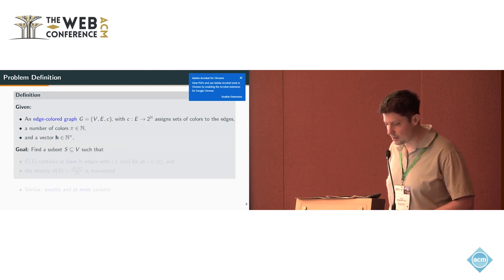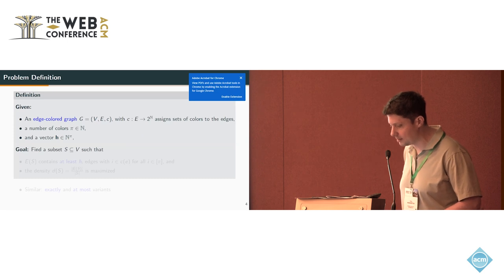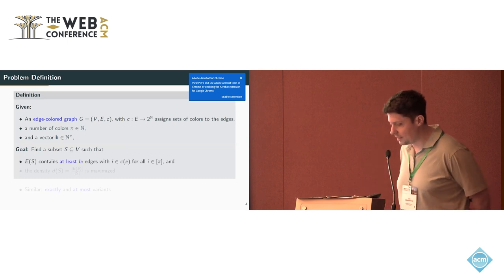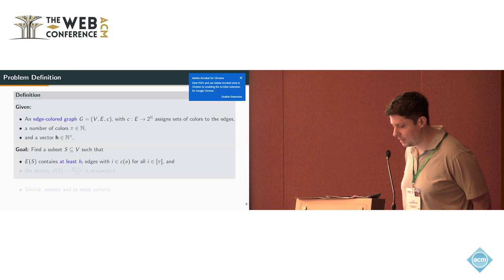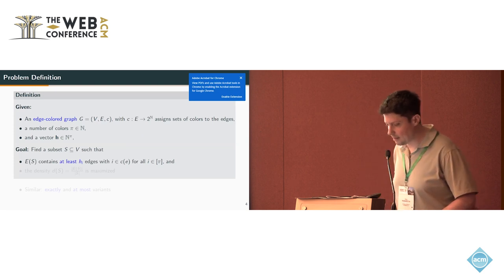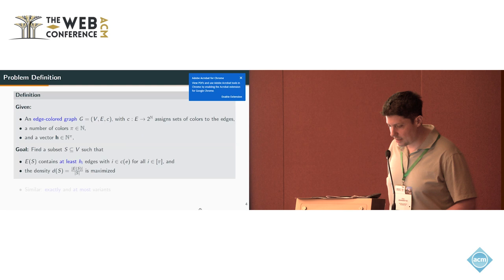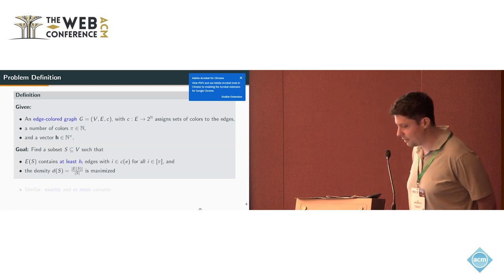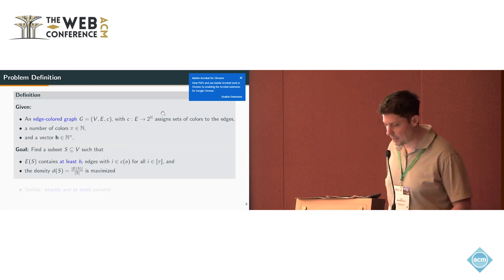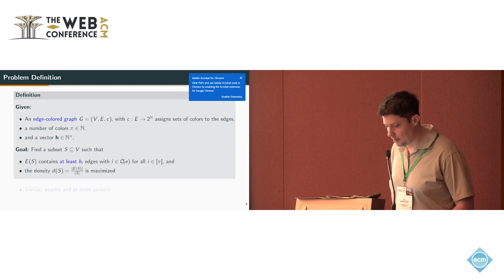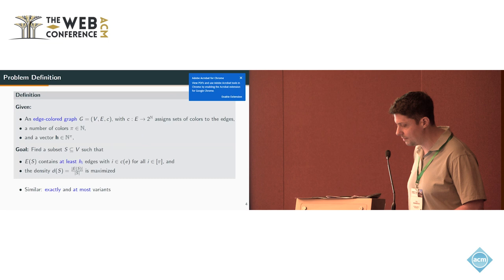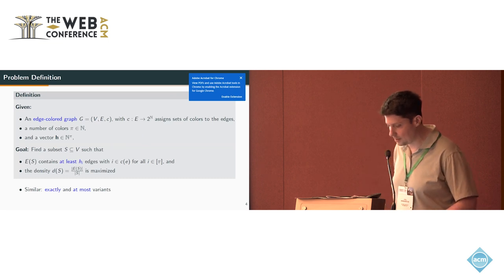Our goal is then to find a subset of the nodes such that each of the color constraints is fulfilled and the density is maximized. What does it mean that the color requirements are fulfilled? We have at least H_i edges that have in their color set the color i. Similarly, we can define the variant for having exactly H_i edges of color i, or at most.